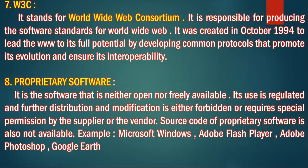Proprietary software — nothing is free here. You cannot distribute it, you cannot modify it, because you have to take special permission from the supplier. The best example is original Microsoft Windows — you can't get original Windows free, you have to make payment to the company. Proprietary software features: not freely available, it's not open source, you cannot distribute it freely, you cannot modify it, you don't get the source code. If you want to modify, you have to take special permission from the manufacturer. You are bound by the restrictions.